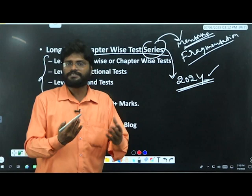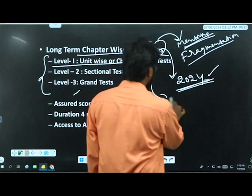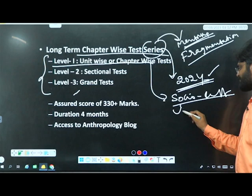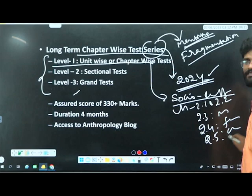In the fragmentation approach, first the student will start with unit-wise tests. For example, you can pick up social cultural anthropology. In social cultural anthropology, every unit - for instance, 2.1 and 2.2 as one test, 2.3 marriage as one test, 2.4 the family chapter is one test, 2.5 kinship chapter is one test.